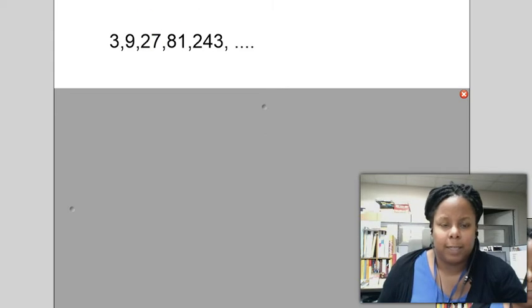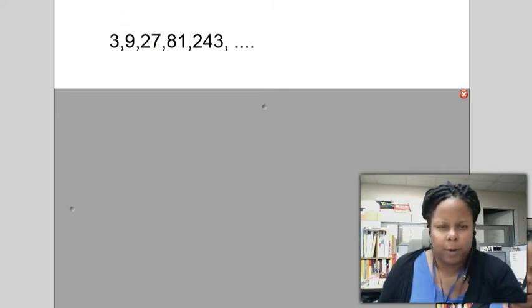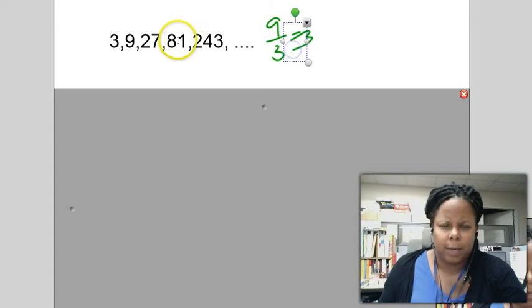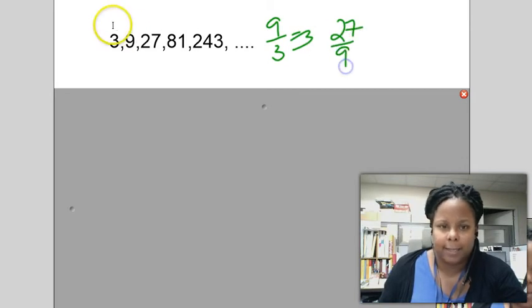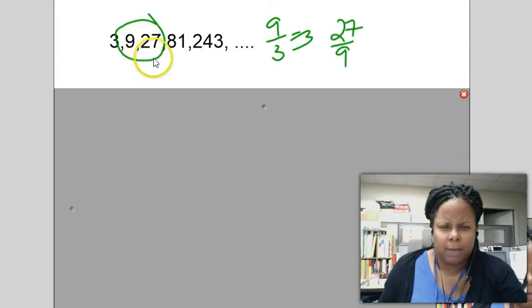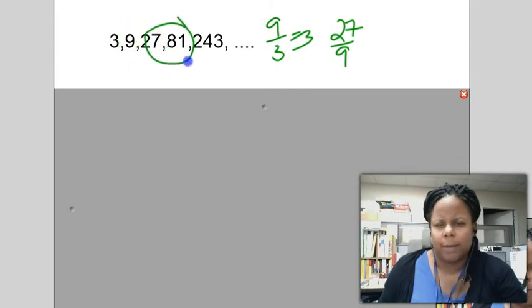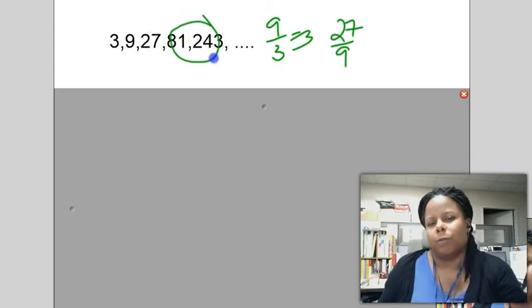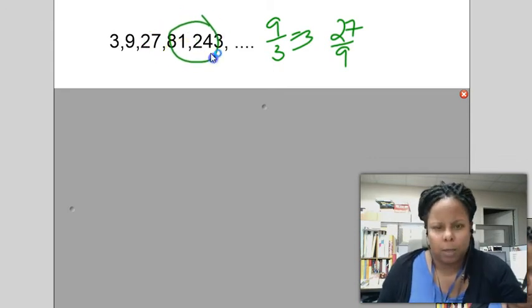But if we want to take a look at dividing previous terms by one another, we do seem to get something. So if I take 9 divided by 3, I get 3. And if I get 27 divided by, I'm sorry, divided by 9. So they have to be a pair. I get 3 as well. And if I get 81 divided by 27, I get 3. And if I get 243 divided by 81, I get 3 as well.